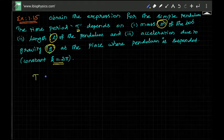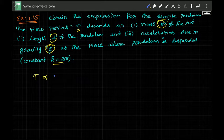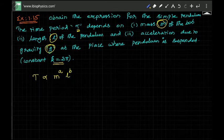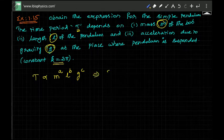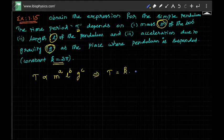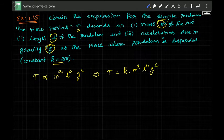The time period of a pendulum is proportional to mass power a, length power b and gravity power c. We don't know that. When you equate this, time period is equal to some constant K into m^a, L^b and g^c.